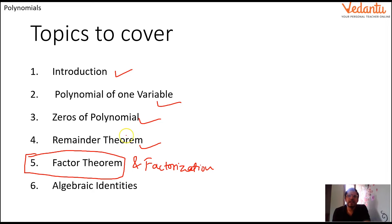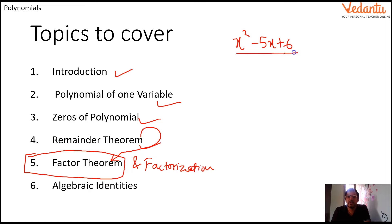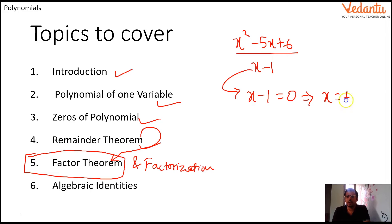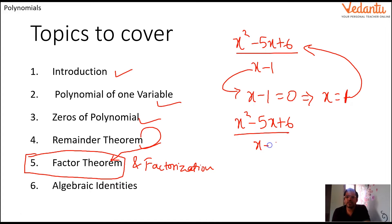Now, what is the factor theorem? Basically it is just an extended version of the remainder theorem itself. You would remember that in the previous session, say for example if I want to divide any polynomial like x² - 5x + 6, and divide it by x - 1, then to find the remainder, we get the zero of the divisor: x - 1 = 0 gives x = 1. Then we substitute into the dividend. Now say for example I divide x² - 5x + 6 by x - 2.